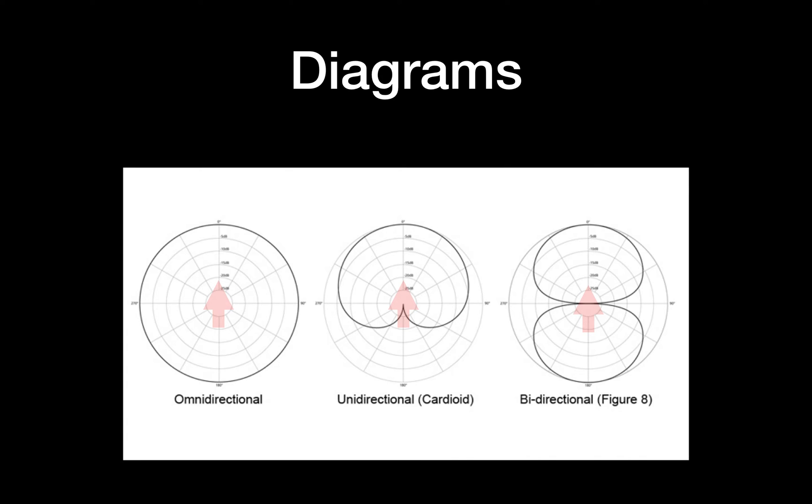And if you have a look on the inside, it shows you how much quieter the signal will be if it's at different directions. So for example, if we look at the omnidirectional microphone on the left hand side, it doesn't matter which direction the sound is coming from, that microphone will pick it up at the max volume, so that's at zero dB line, which is on the outside.